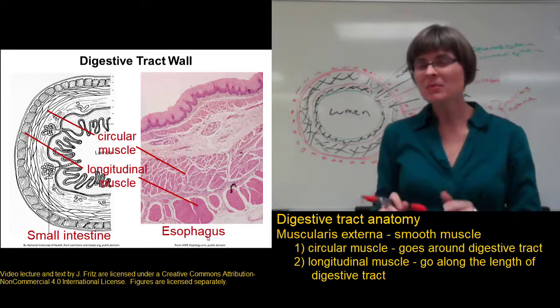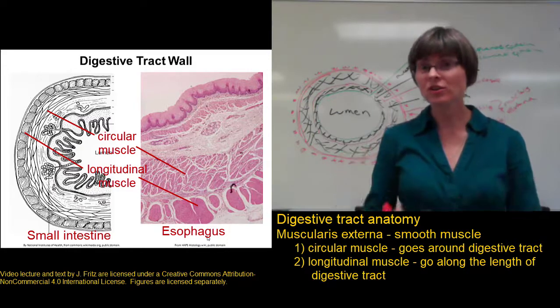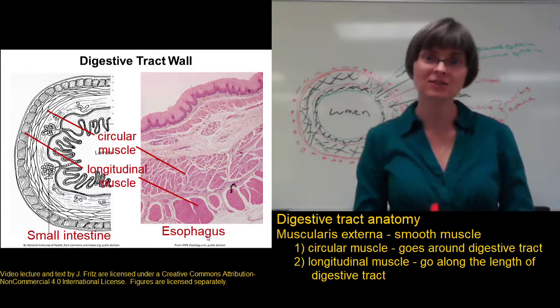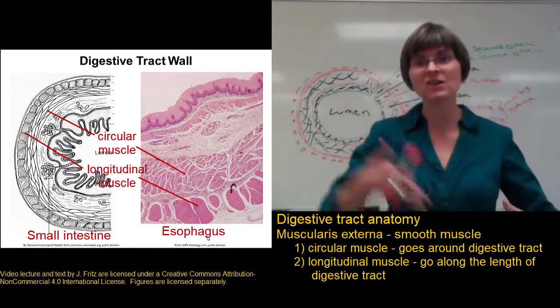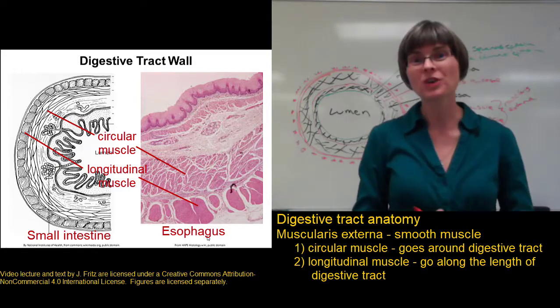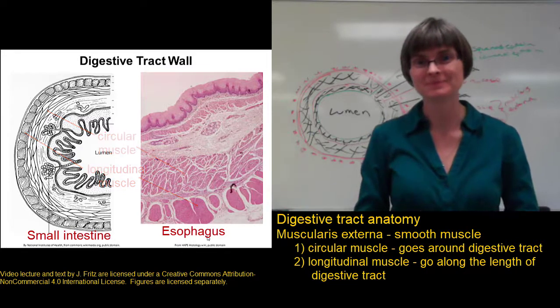In the stomach, there's a third layer of muscle in the muscularis externa that goes at an angle. It's called the oblique muscle, but we'll talk about that more when we get to the stomach.